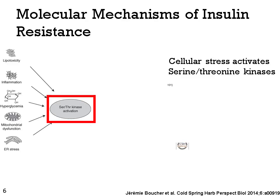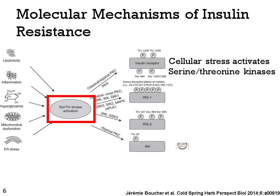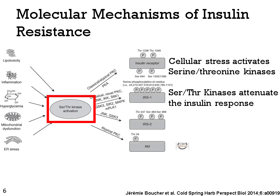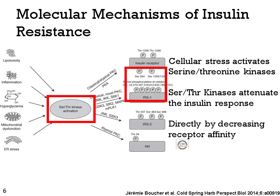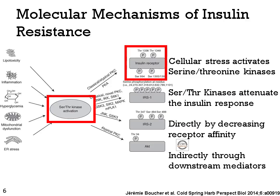Insulin signaling is complex and varied and can go wrong at many different points. On the left is a representation of some of the ways insulin signaling is known to go wrong. All of these different inputs lead to the activation of serine-threonine kinases, which attenuate the insulin response. This can be done directly — by decreasing receptor affinity through phosphorylation of the insulin receptor — and indirectly, through phosphorylation of downstream mediators.